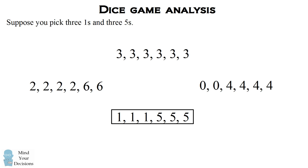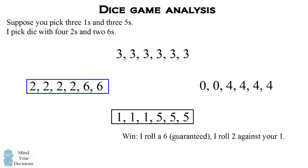This argument continues. Let's suppose you pick the die that I just had. Well, in that case, I'm going to pick the next die, which has two on four of its faces and six on two of its faces. We can do a similar calculation. I'm going to win two out of the six times when I roll a six, guaranteed.